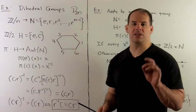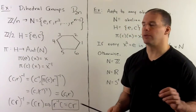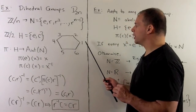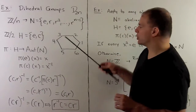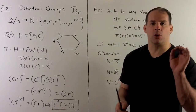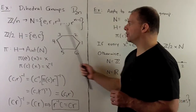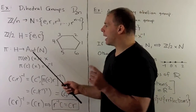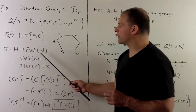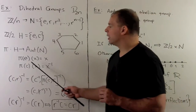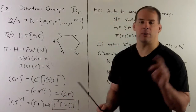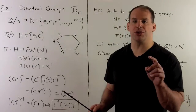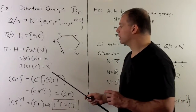Let's show that the dihedral groups can be realized as a semi-direct product of Z mod 2 with Z mod N. For D sub 2N, we can generate this group with two elements: R, which is rotation carrying 1 to 2, and C, which is reflection through the horizontal line. R gives us a normal subgroup — the subgroup of rotations — which has index 2, so it's normal, and it's isomorphic to Z mod N. C gives us a two-element group. I want a homomorphism from H to Aut(N), so I define: pi of the identity on X equals X, and pi of C on X equals X inverse. Since C has order 2, pi of C is either the identity or has order 2, so this is non-trivial.